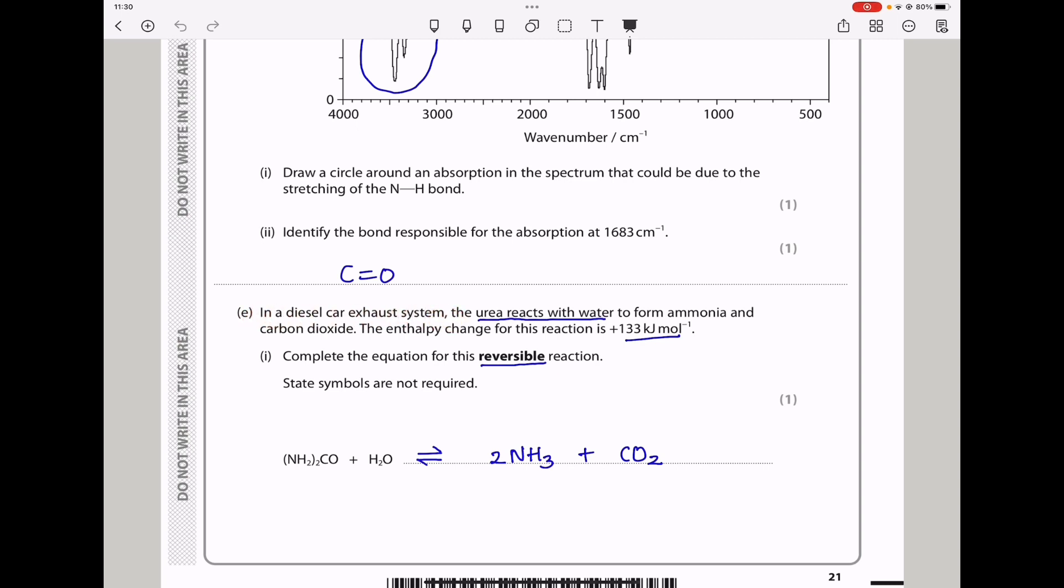Part E says, in a diesel car exhaust system, the urea reacts with water to form ammonia and carbon dioxide. The enthalpy change for the reaction is positive 133 kilojoules per mole. Complete the equation for this reversible reaction. State symbols are not required. Now because they've told us this produces ammonia and carbon dioxide, I just wrote the answers and then balanced the equation. That is what I got. So as required.